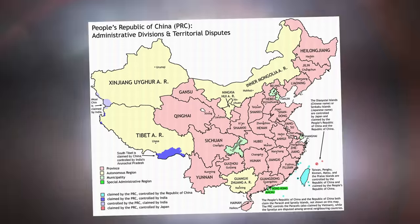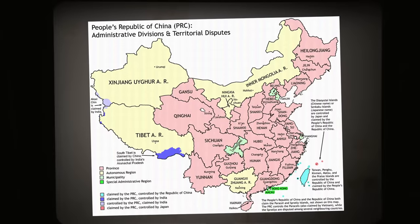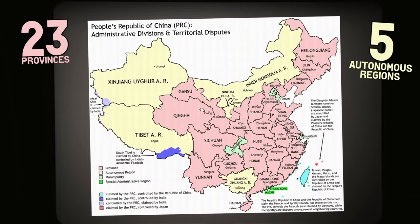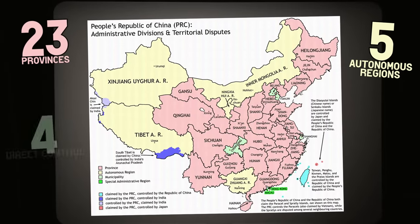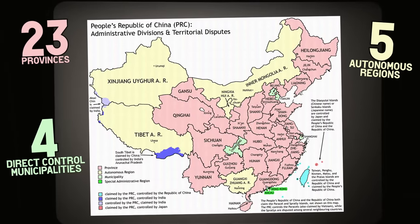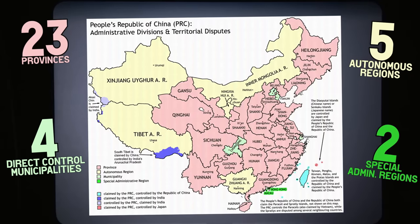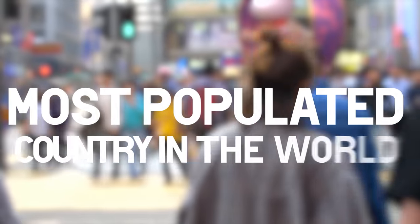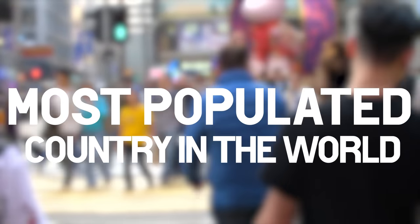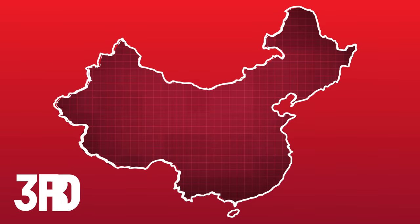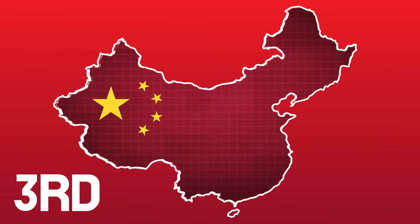China, a country in East Asia with 23 provinces, 5 autonomous regions, 4 municipalities directly under the control of the central government, and 2 special administrative regions — the largest country in terms of population and the third largest in terms of territory size.